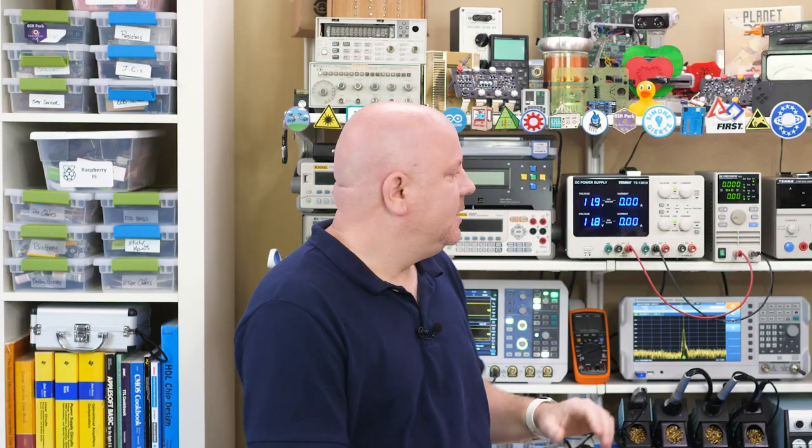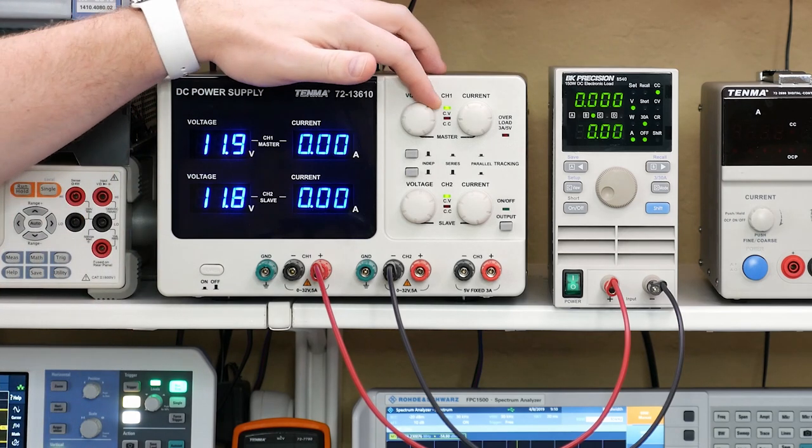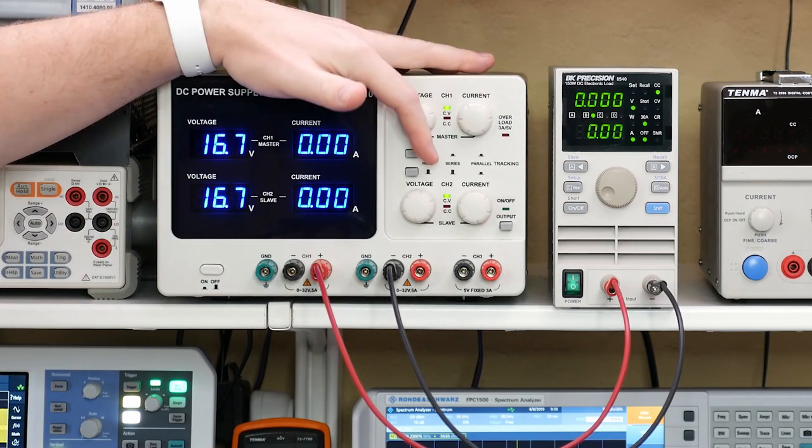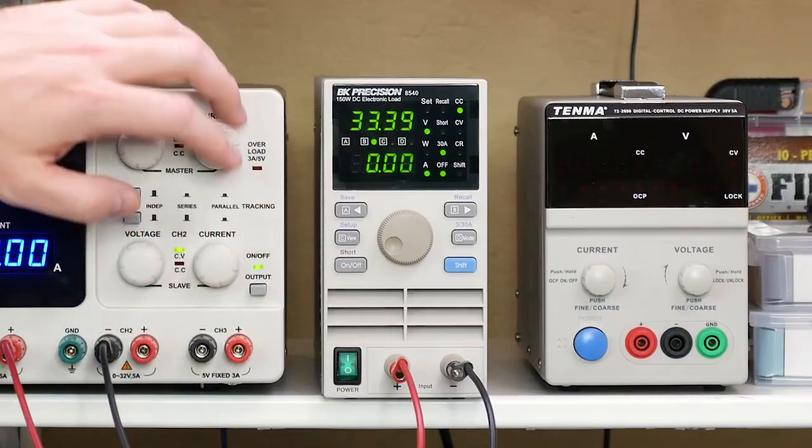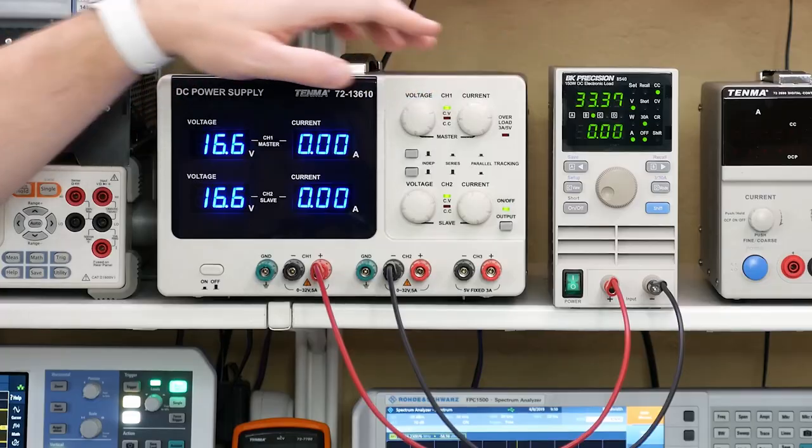Now notice what happened. Both channels are showing the same voltage and they track but only one of the knobs is active. If we look at the voltage on our loads voltmeter we can see that it is twice the value of the supply and that is because the two channels are in series.